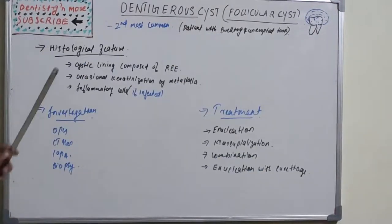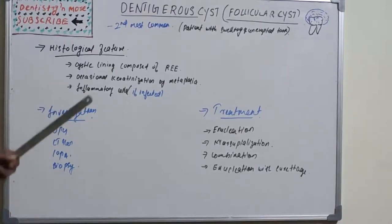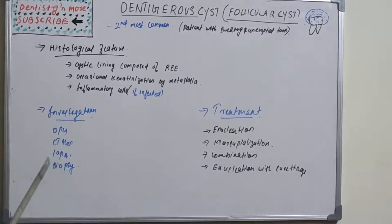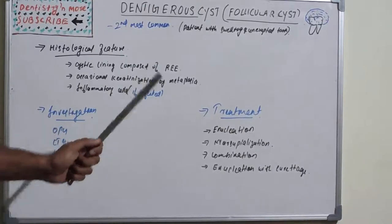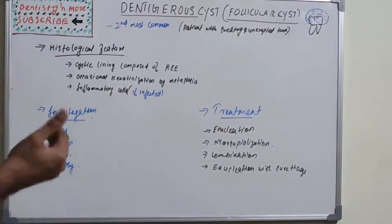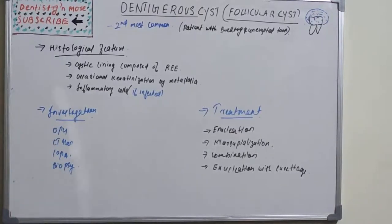In histologic features, the cystic lining is composed of reduced enamel epithelium with occasional keratinization by metaplasia. Chronic inflammatory cells will be present if infected. Investigations include OPG, CT scan, and biopsy for a clear picture. Treatment options are enucleation, marsupialization, or a combination of both, and curettage associated with enucleation can also be performed. That covers dentigerous or follicular cyst.